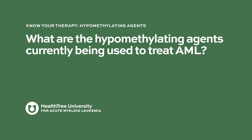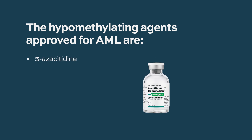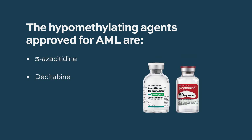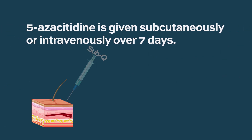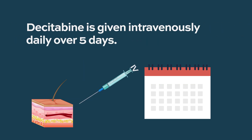What are the hypomethylating agents currently being used to treat AML, and how are they different? There are two drugs available. The first one is 5-azacytidine and the second one is decitabine. The 5-azacytidine is given subcutaneously or intravenously over seven days of treatment, and decitabine is given IV daily for five days.